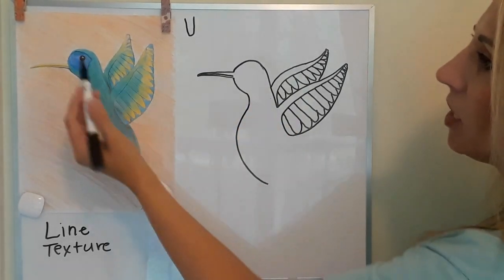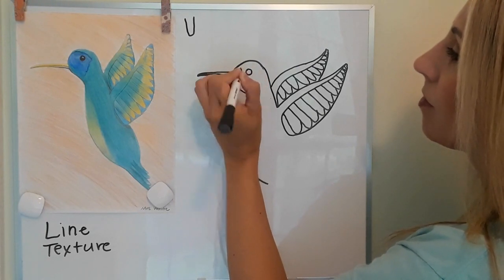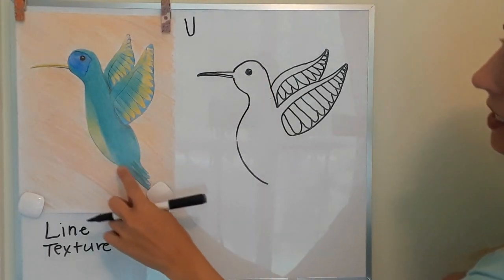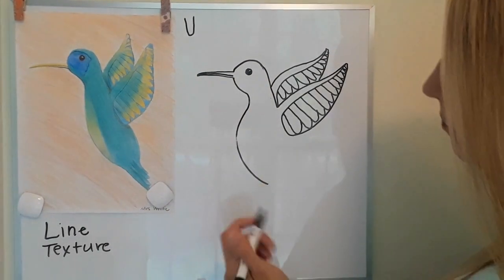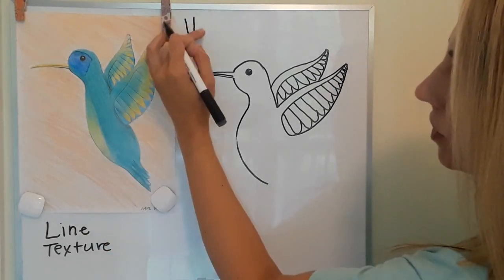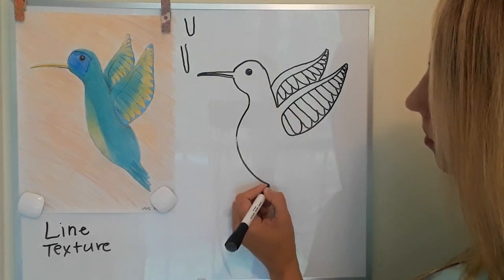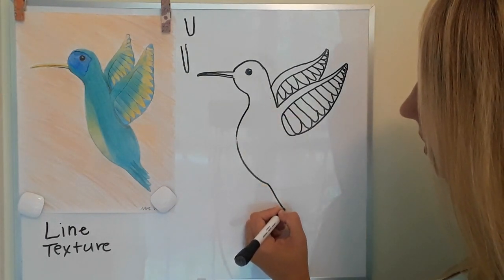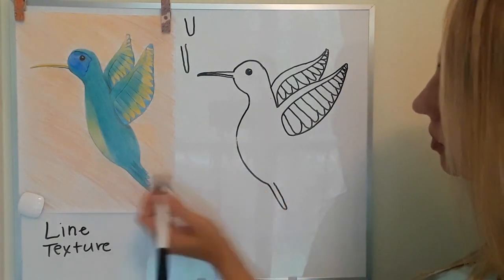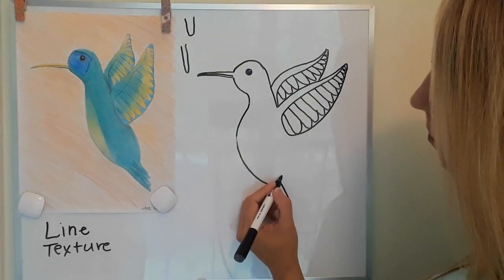Now I'm going to go ahead and add the eye. Then let's finish out the bottom portion — we're going to do a longer version of what we were doing for the feather texture. So a diagonal line and then a skinny U shape, and then just keep adding those skinny U shapes beside it, like we did with the wing.